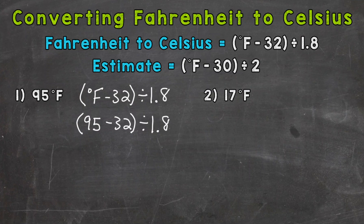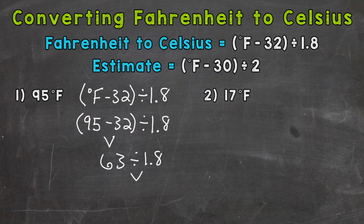We'll start with 95 minus 32, which gives us 63. Bring down the division sign and 1 and 8 tenths, and we wrap up the conversion by dividing 63 by 1 and 8 tenths. That gives us an answer of 35 degrees Celsius. So 95 degrees Fahrenheit equals 35 degrees Celsius.